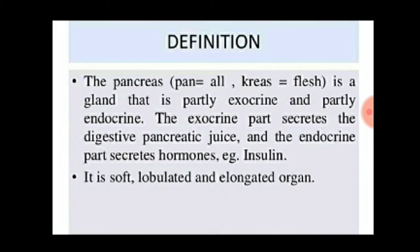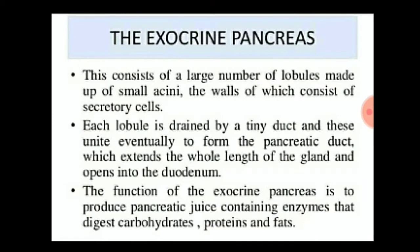The exocrine pancreas consists of a large number of lobules made up of small acini, the walls of which consist of secretory cells. Each lobule is drained by a tiny duct, and these unite eventually to form the pancreatic duct, which extends the whole length of the gland and opens into the duodenum. The function of the exocrine pancreas is to produce pancreatic juice containing enzymes that digest carbohydrates, proteins, and fats.